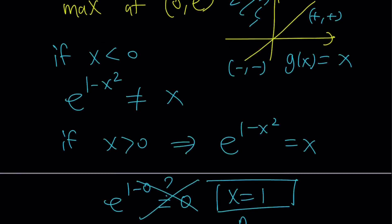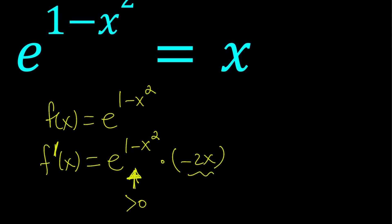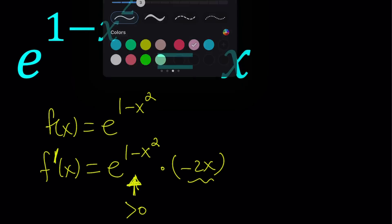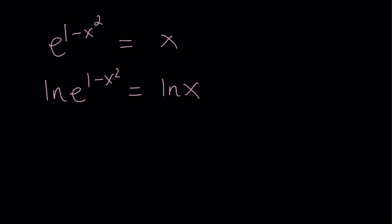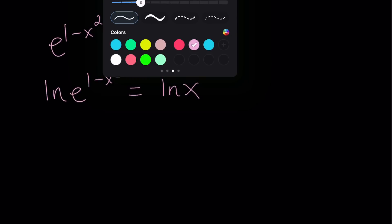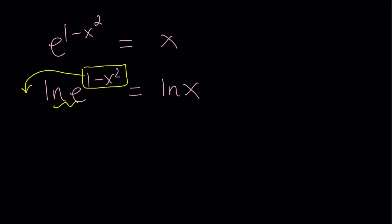Let's take a look at another approach. Starting with the original equation, e to the power 1 minus x squared equals x. Since we have e at the base, I want to take the natural log of both sides. We bring the exponent 1 minus x squared to the front, and ln of e is just 1, giving us 1 minus x squared equals ln x.